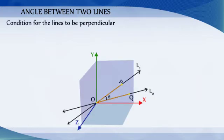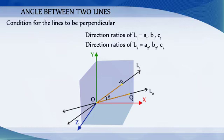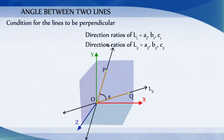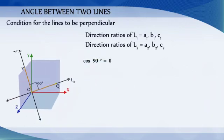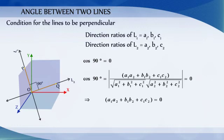Condition for two lines with direction ratios A1, B1, C1 and A2, B2, C2 to be perpendicular. If these two lines are perpendicular, then the angle between them, theta, equals 90 degrees. Then cos 90 equals 0, so we get A1·A2 + B1·B2 + C1·C2 equals 0.